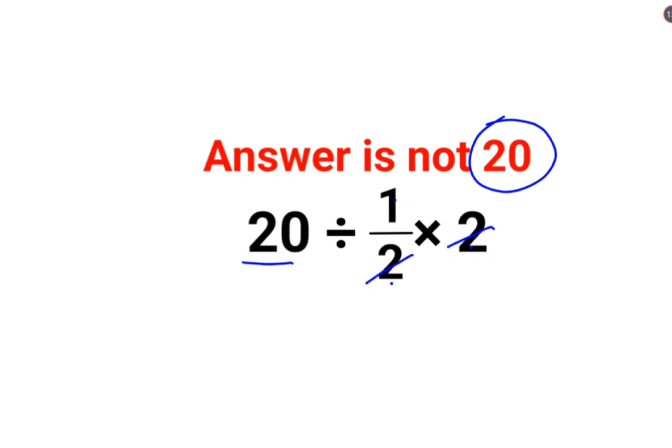A lot of people think that this is cancelling, so we just have 20 divided by 1, and the answer for this question is supposed to be 20.